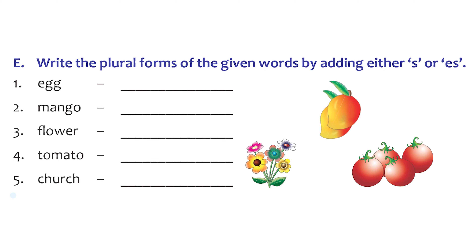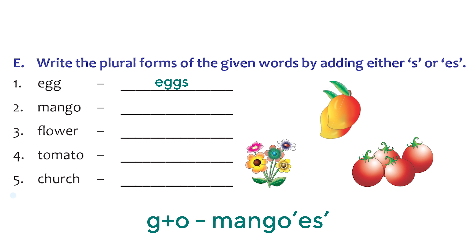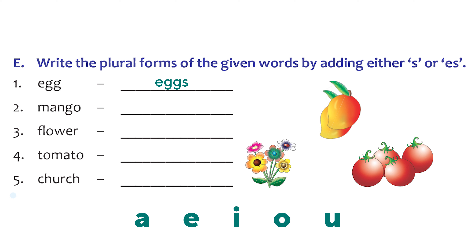Let's look at the activity on page 26. The first word is 'egg' — we add S at the end and get 'eggs', the plural form. The second one is 'mango', but for mango we need to add ES at the end, because the word ends with a consonant plus a vowel. The vowels are A, E, I, O, U. All other letters are consonants. So when any word ends with a consonant plus a vowel, add ES. The plural of mango becomes 'mangoes'.